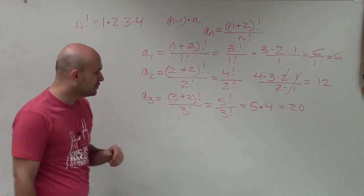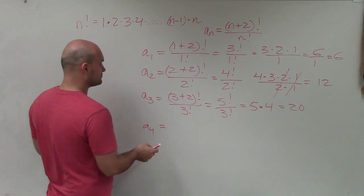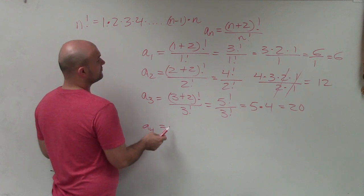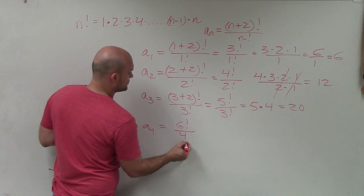Let's go into 4 and let's try to speed this up a little bit. 4, so if I plug in a 4, that's going to give me 6 factorial over 4 factorial.